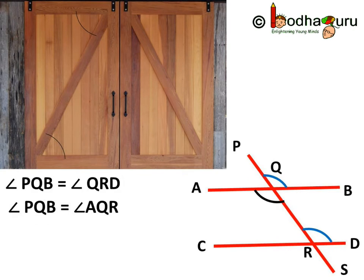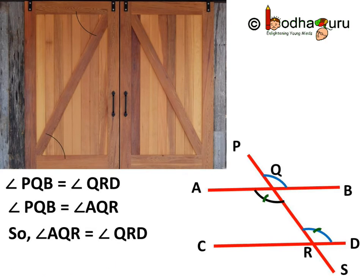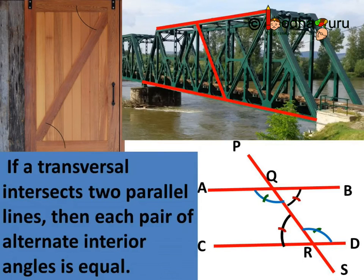Same way, angle PQB is equal to angle QRD as they are corresponding angles. But angle PQB is also equal to angle AQR as they are vertically opposite angles. So we get angle AQR is also equal to angle QRD, as both of them are equal to angle PQB. And this is another pair of alternate interior angles.